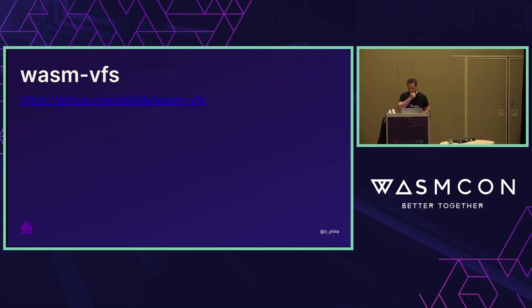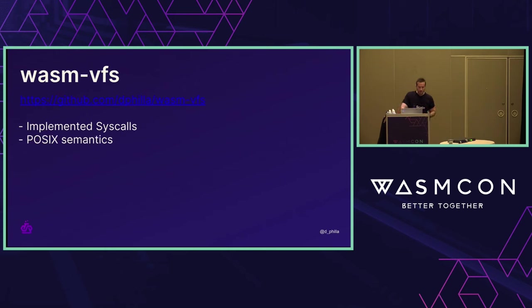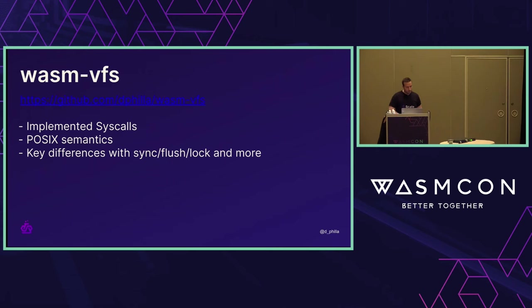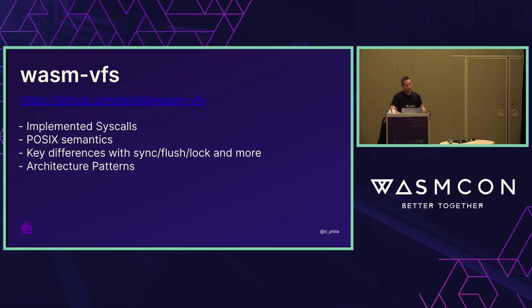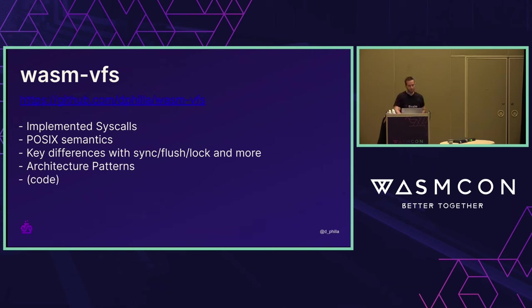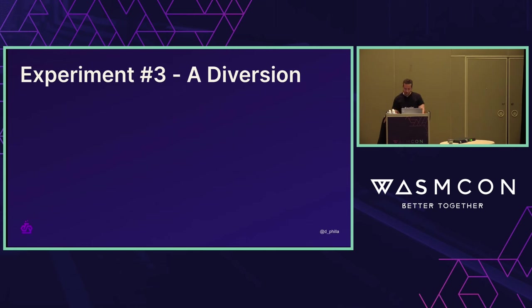You can make the argument that this type of file system operation using an in-memory file system is faster than native code in some respects. We've been working on this for a while and are implementing full POSIX compliance — about 80% done. We just looked at the POSIX spec, created a very similar system in Rust, but there are key differences with things like sync, flush, and lock. The architecture we went with has your guest program run in a single WASM instance, mediated through the runtime to another stateful instance that is the virtual file system.